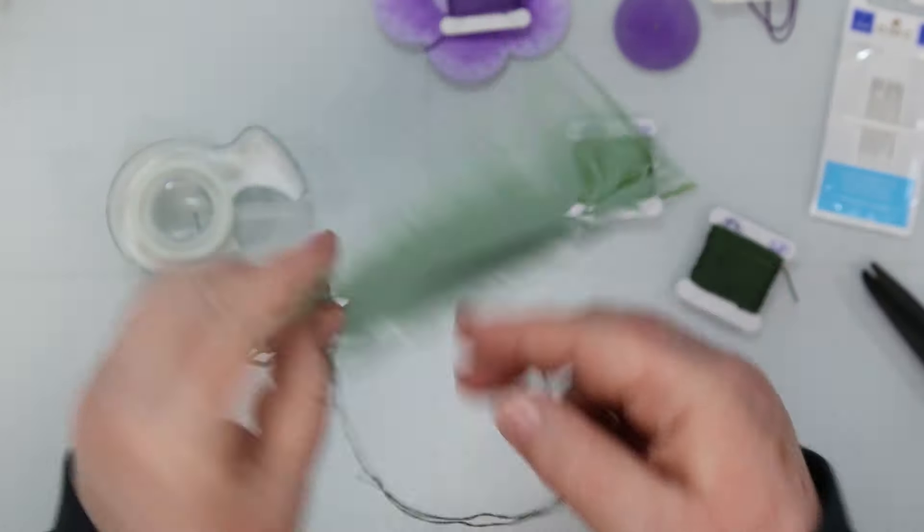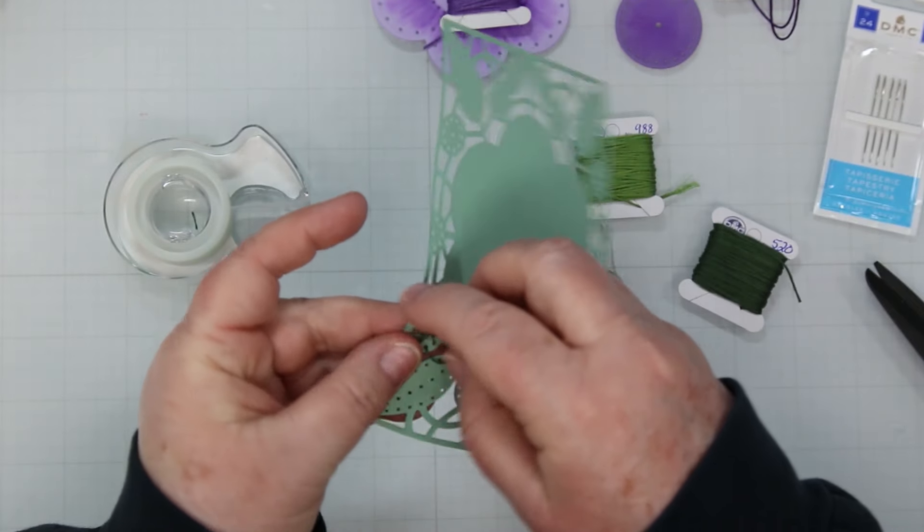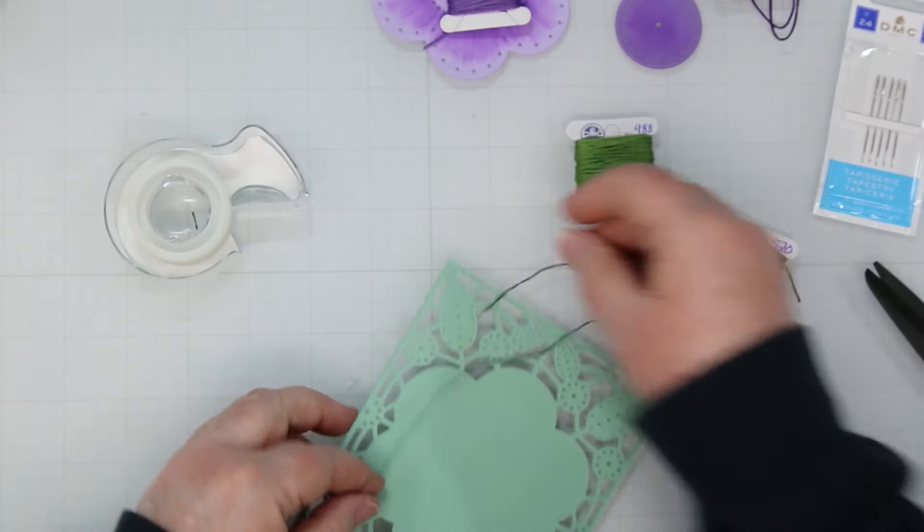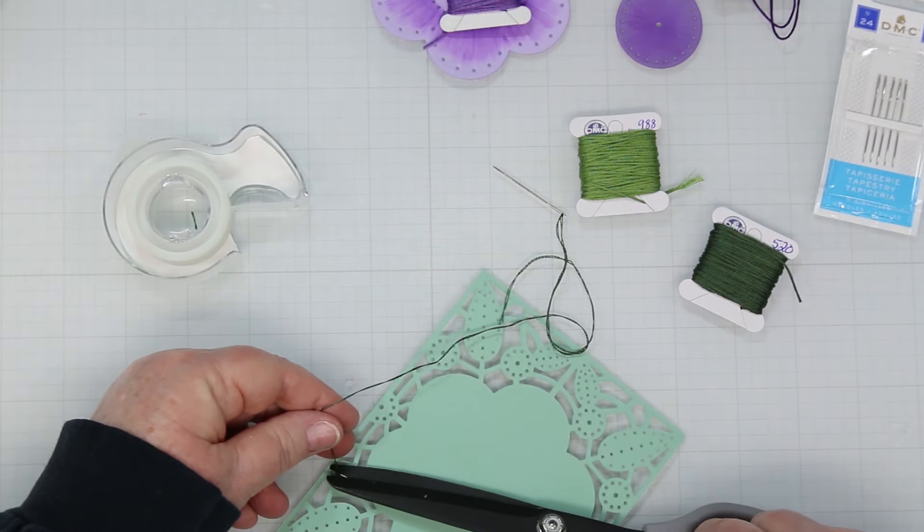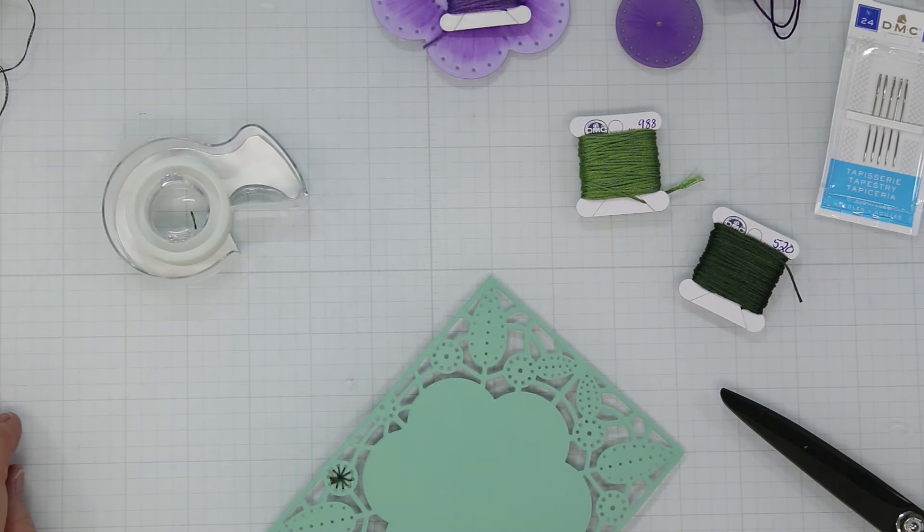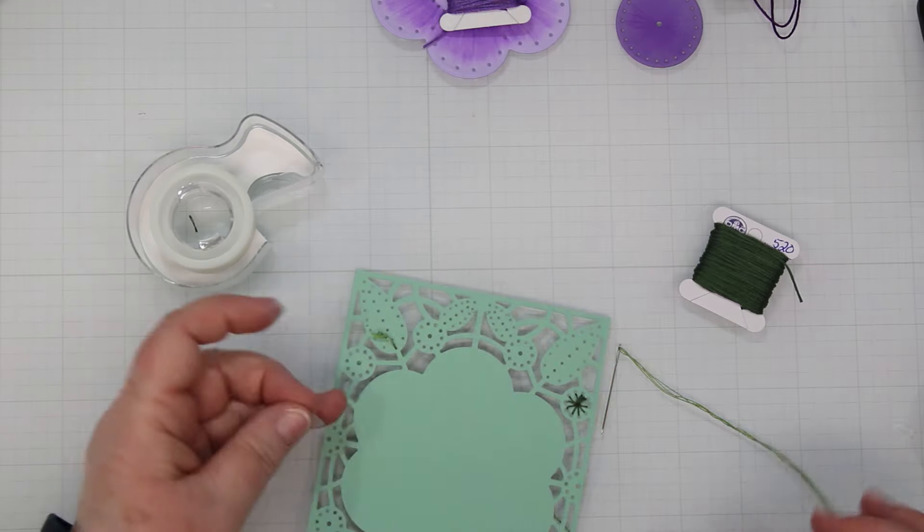Okay and I'm at the end so I'm going to turn it over and I like to run it through two or three of the pieces on the background and then through the loop. Okay and then I cut with a little tiny tail and when I get ready to put the card together I'm going to make sure I put a big blob of glue on top of that so that it doesn't come undone.